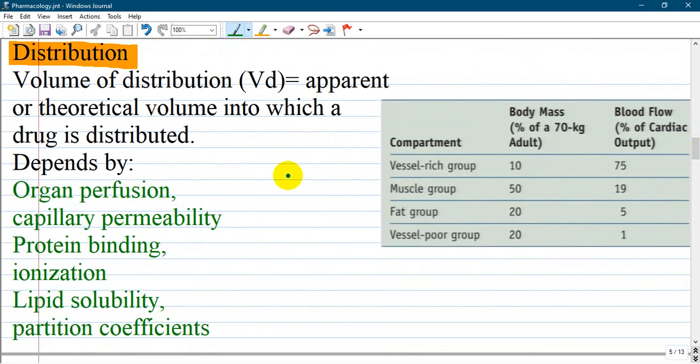Distribution. Volume of distribution represents apparent or theoretical volume into which a drug is distributed. Distribution means from the blood vessel to another compartment. It depends on organ perfusion, capillary permeability, protein binding, ionization, lipid solubility, and partition coefficient.